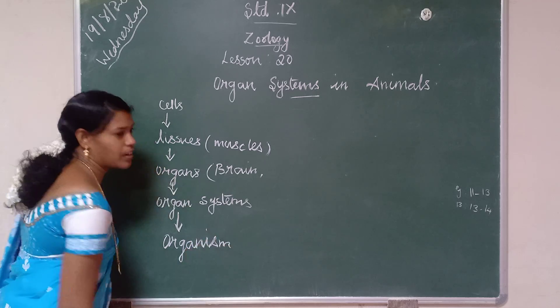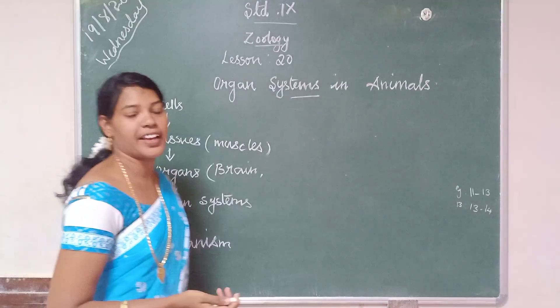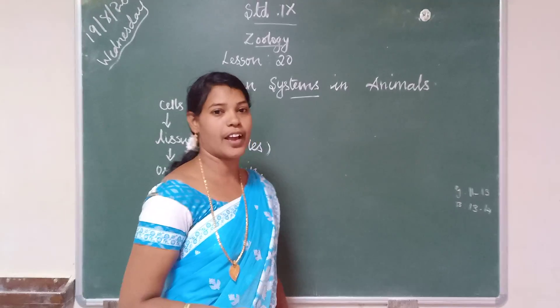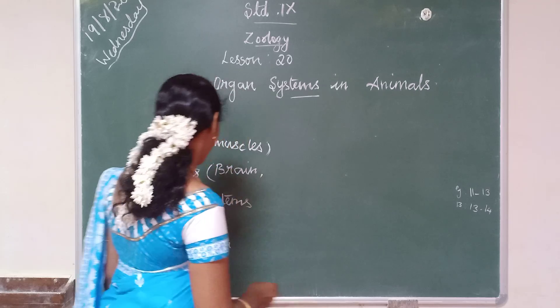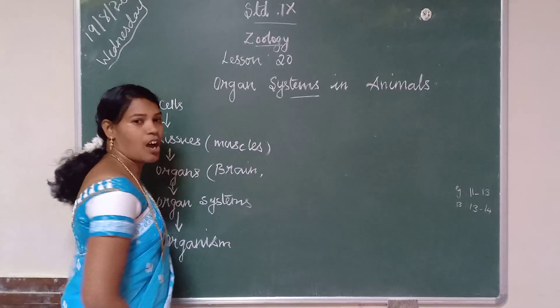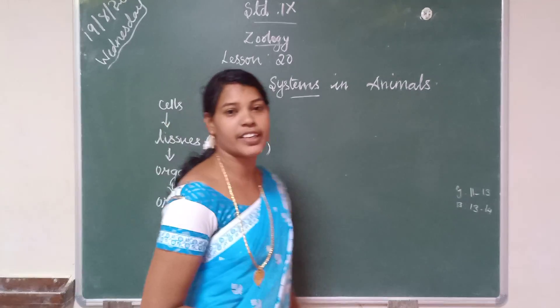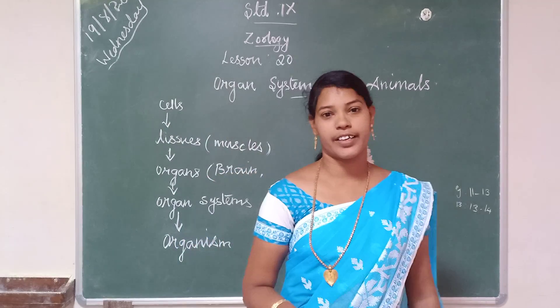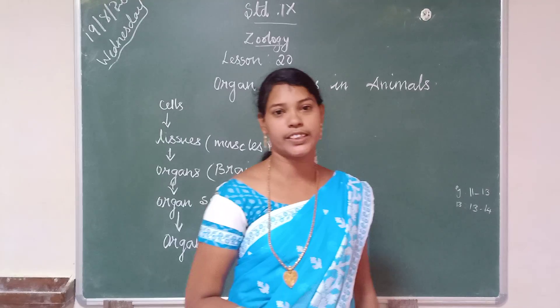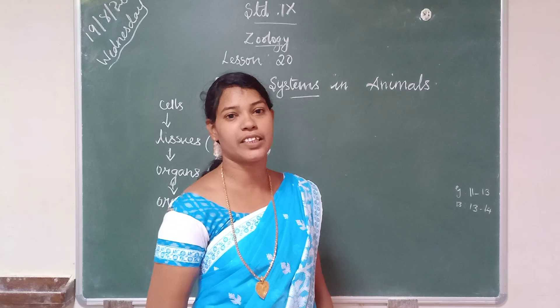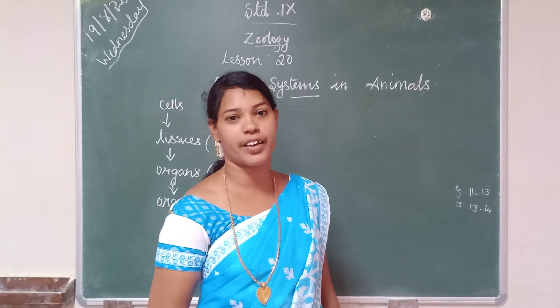For example, any animal — man or lion. All the organ systems and organs work together and maintain the body of an organism.